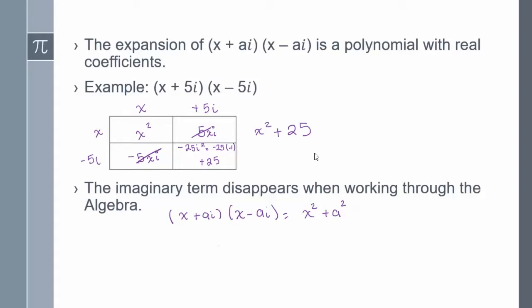Now that we know how to multiply complex numbers, we are going to understand the process in reverse. That is, we are going to factor polynomials with real coefficients but complex factors.